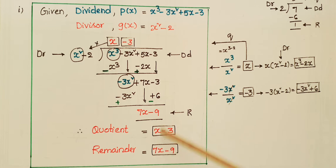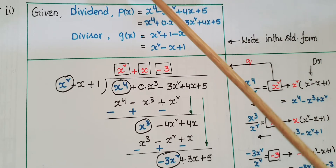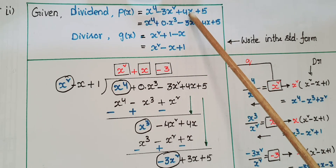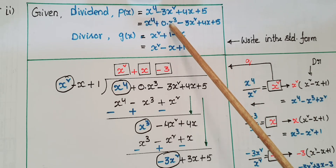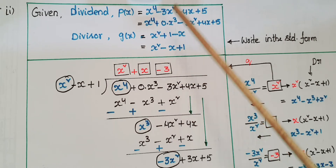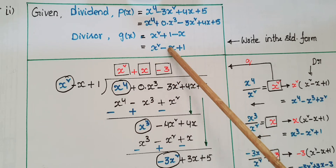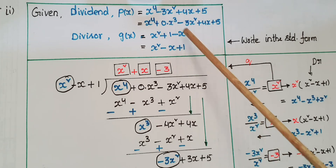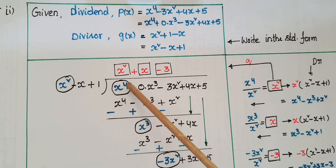The second problem: the dividend is p(x) = x⁴ - 3x² + 4x + 5. There is no x³ term, so add 0·x³. The divisor is g(x) = x² - x + 1, which needs to be written in standard form: x² - x + 1, ordering by degree from highest to lowest.